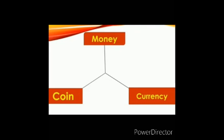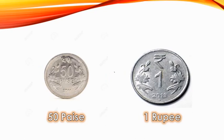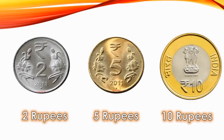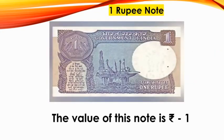Money has two parts: first one is coin and the other one is currency. Let us look at the coins and currency notes of different values. The types of coins are: 50 paisa, 1 rupee — you must have seen these coins. Then 2 rupees, 5 rupees, and the last one is the 10 rupees coin.